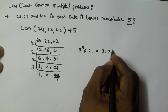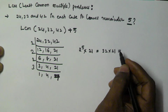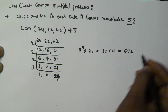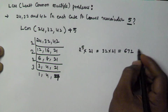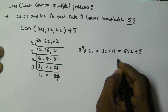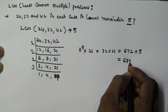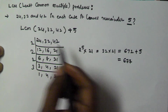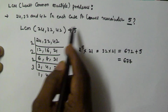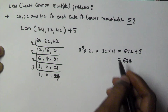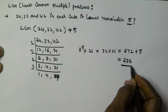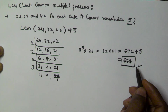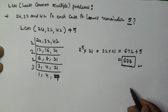So that is 2 to the power of 5, which is 32, multiplied by 21, which equals 672. We add plus 5, giving us 677. So 677 is the least possible number — when divided by 24, 32, and 42, it leaves a remainder of 5. I hope you got this. Thank you very much for watching this video, please subscribe.